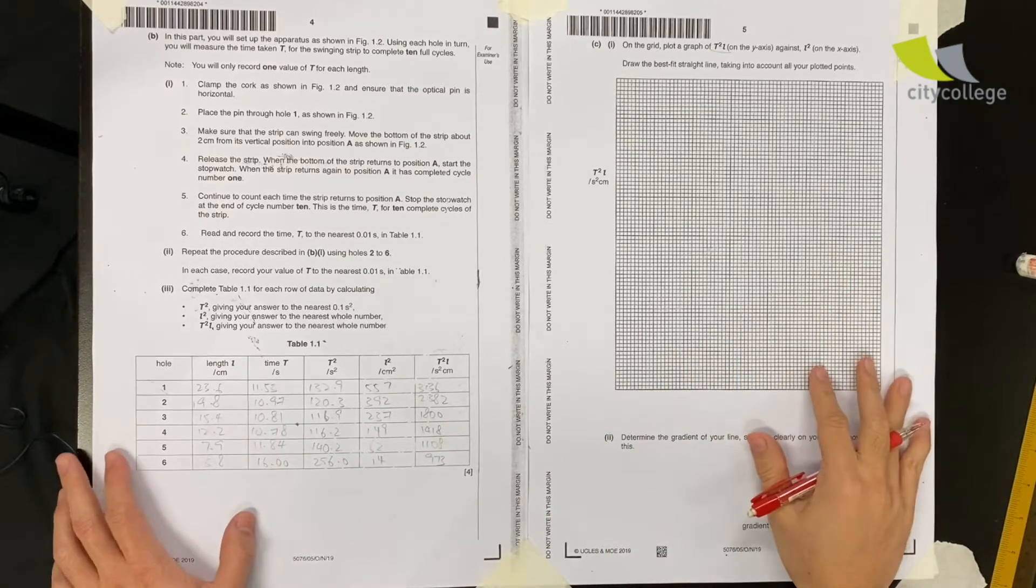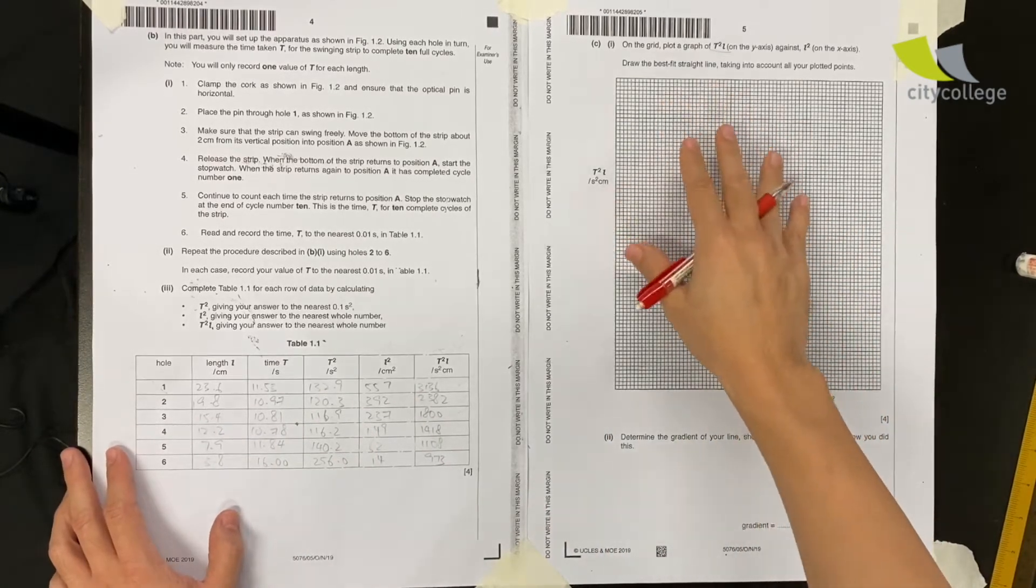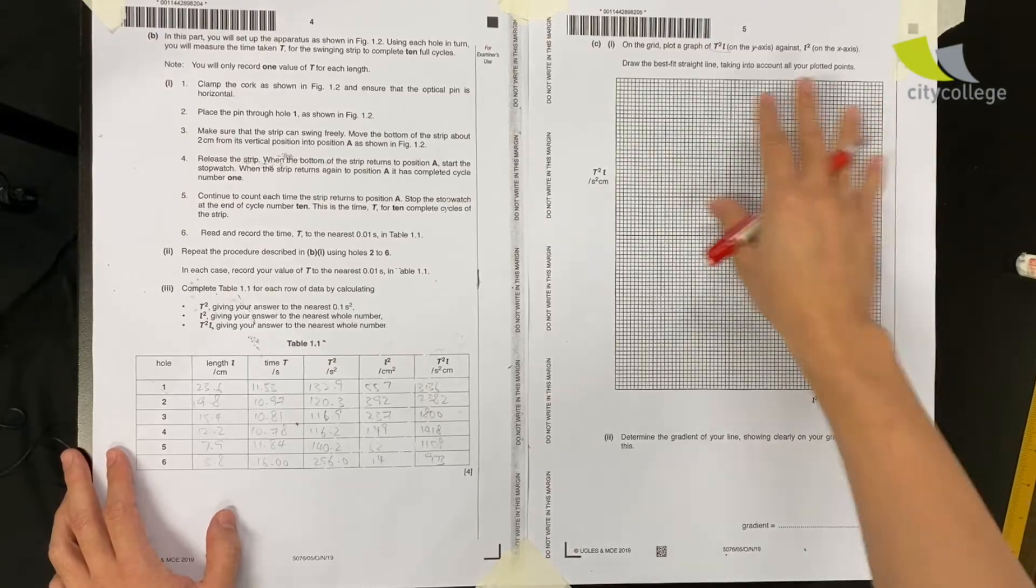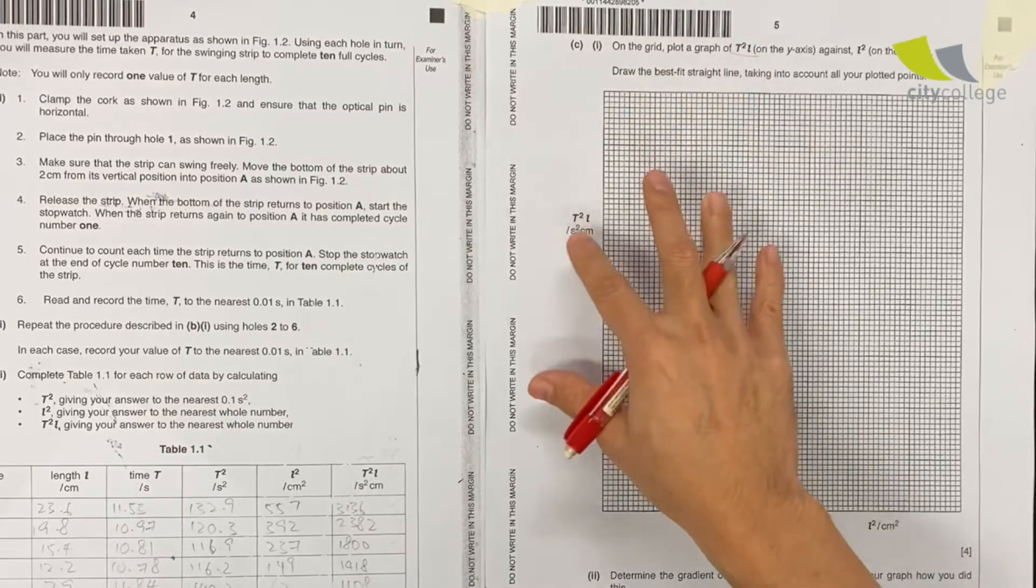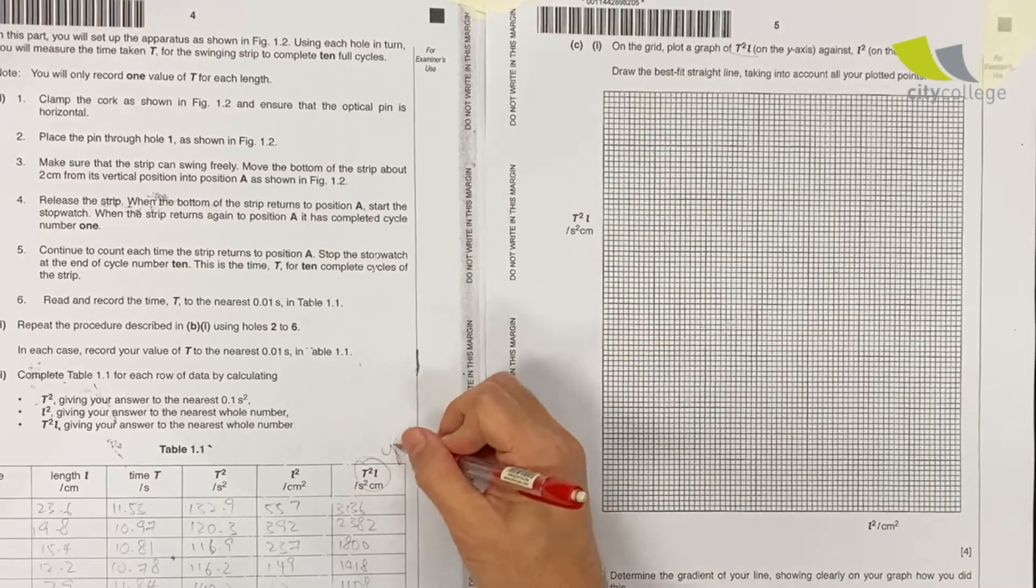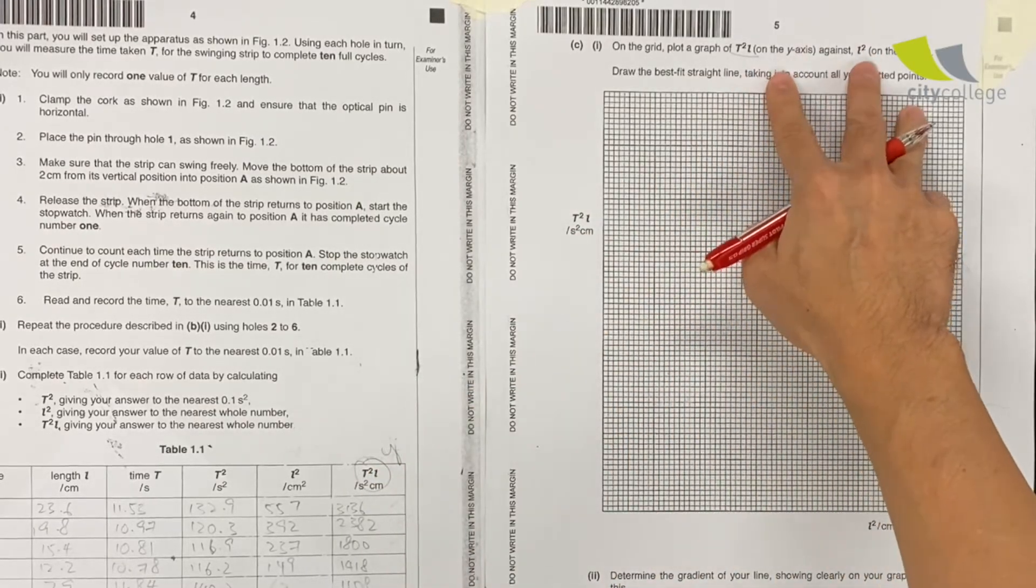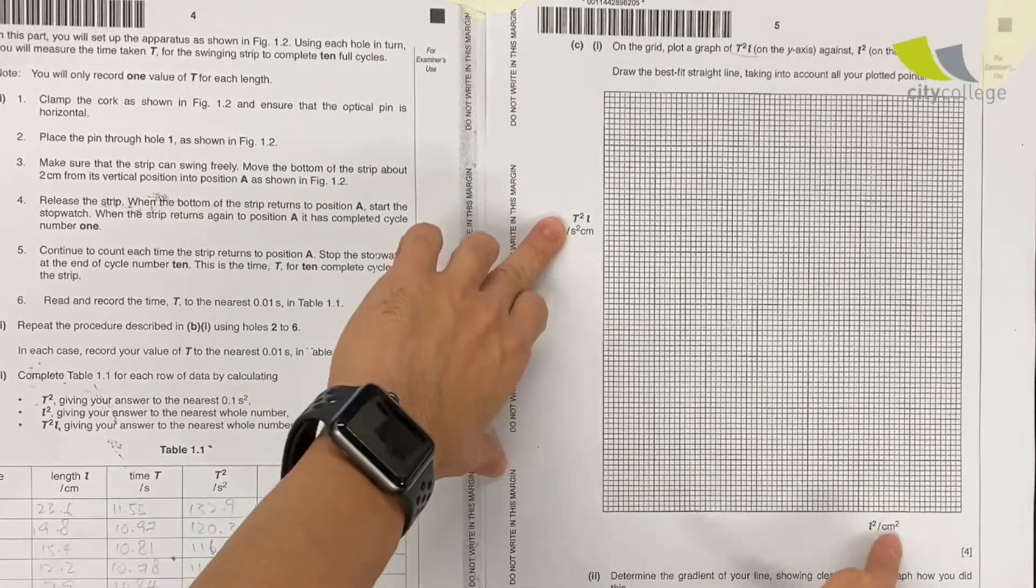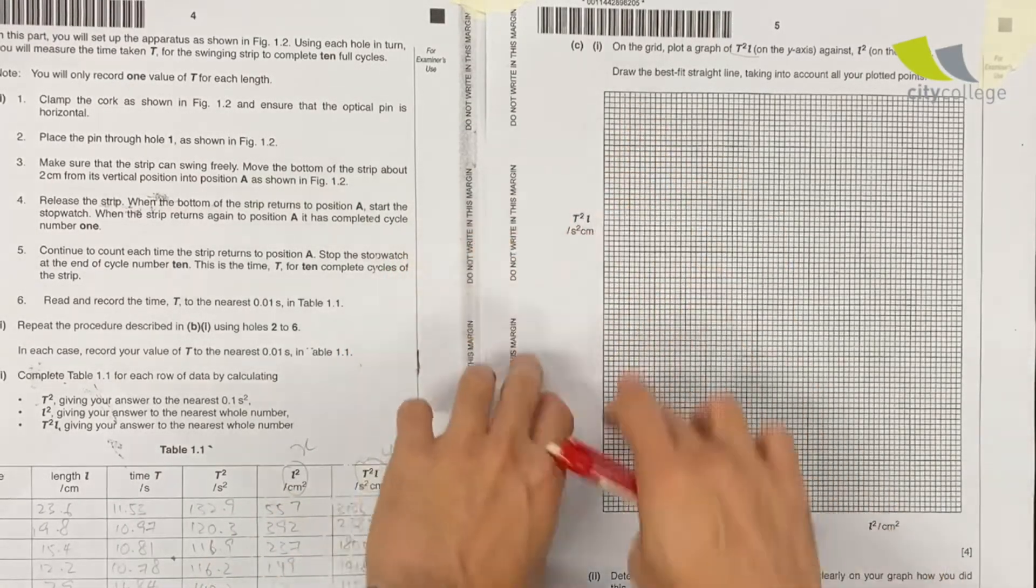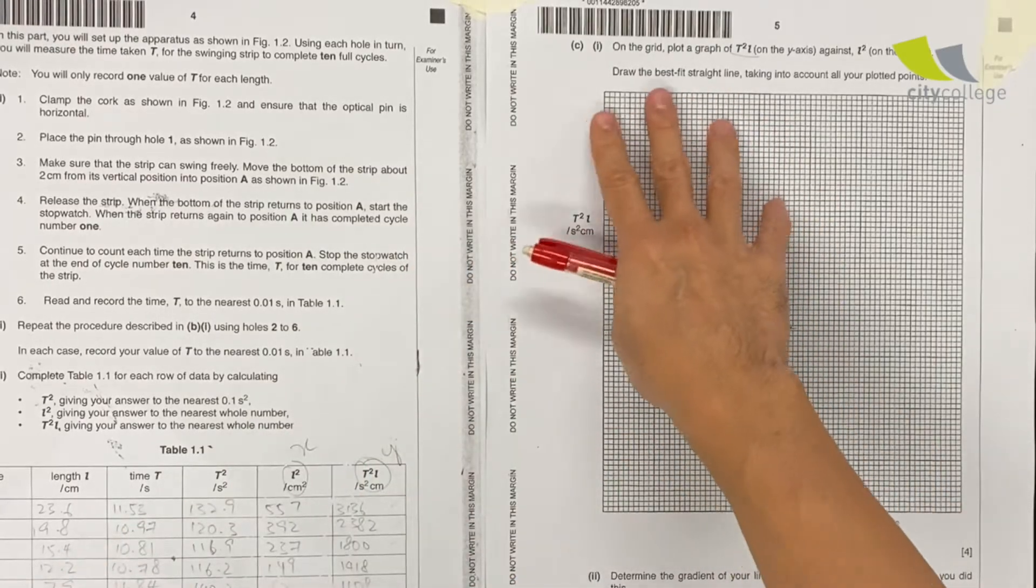Okay, now we come to part C which is plotting the graph. This is the main meat of the practical paper. On the grid, plot the graph of T² L on the y-axis and against L² on the x-axis. This is written for you already, so if you still make a mistake I don't know what to say.